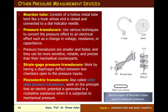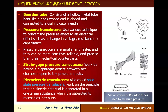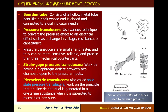Strain-gauge pressure transducers work by having a diaphragm deflected between two chambers to sense pressure. The other type is the piezoelectric transducer, also called a solid-state pressure transducer, which works on the principle that an electric potential is generated in a crystalline substance when subjected to mechanical pressure.